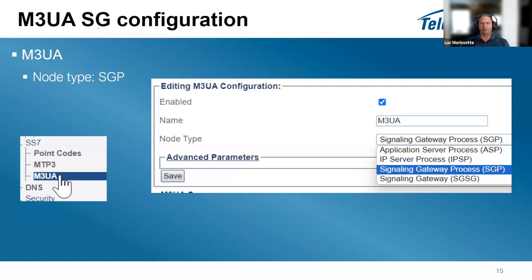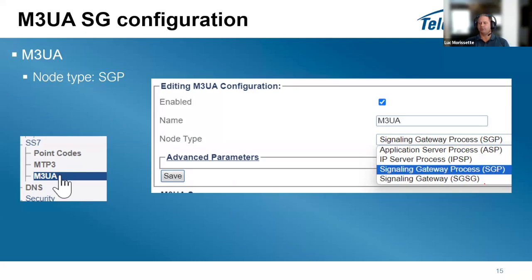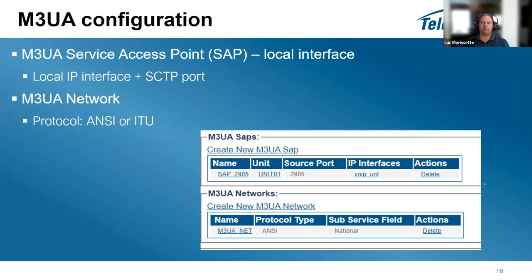For signaling gateway configuration, you need to use the SGP (signaling gateway process) node type in the M3UA configuration. Other selectable modes include ASP, IPSP (not normally used), and signaling gateway to signaling gateway — a special mode for connecting to other signaling gateways.